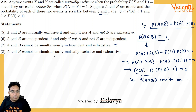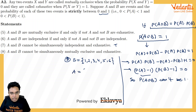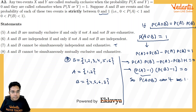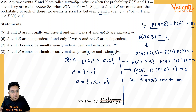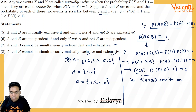Statement 8: A and B cannot be simultaneously mutually exclusive and exhaustive — this is false. For example, throwing a die: let A = {1,2} and B = {3,4,5,6}. These are mutually exclusive and exhaustive. In fact, the total probability law and Bayes' theorem are based on this kind of partition. So the final answers are True, True, True, False.